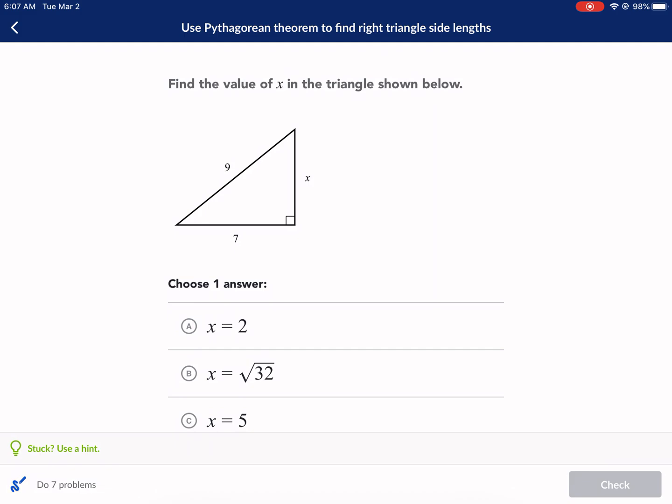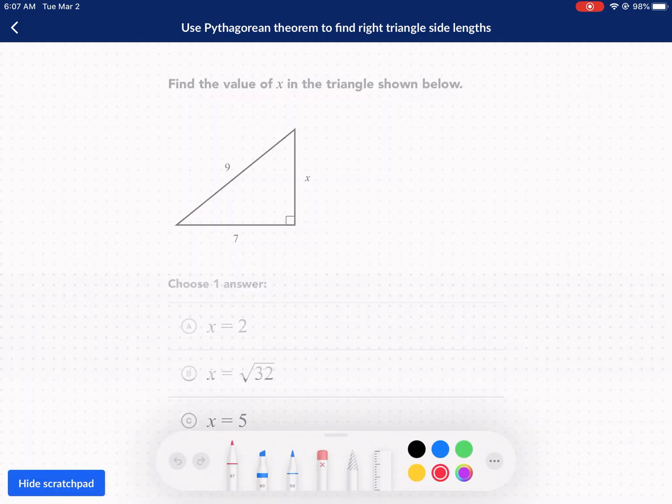Find the value of x in the triangle shown below. One of the things you'll need to know is clearly the Pythagorean Theorem. The Pythagorean Theorem states that if we square two legs and add them together, it's going to be equal to the hypotenuse squared.